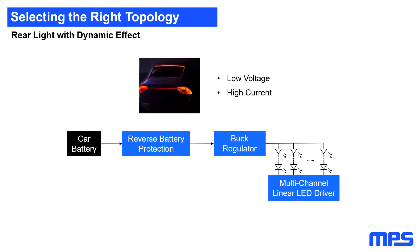In the case of rear lights, what is demanded is high controllability of each LED, and light brightness is not the primary concern. For this reason, the recommendation is to use a buck converter to step down the battery voltage to a suitable value to fit strings of one, two, or three LEDs placed in parallel. A multi-channel linear LED driver can then control each string independently. This topology also suits the new light designs that extend along the entire rear side of the car, where the rear light can be separated into small lighting modules connected like Lego pieces.